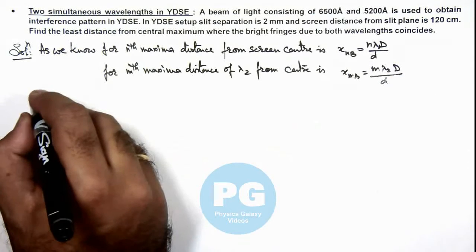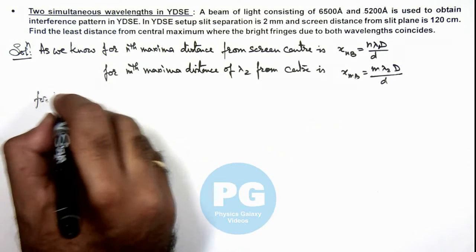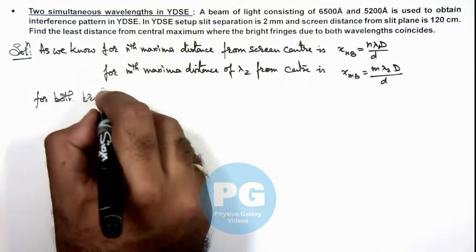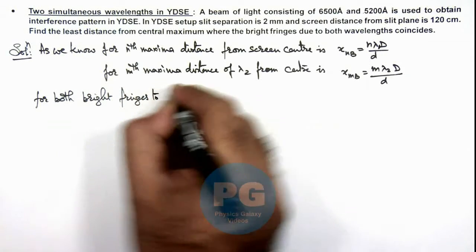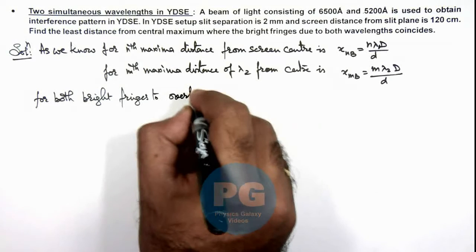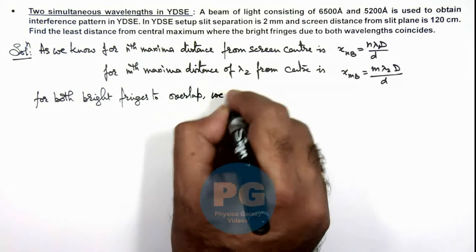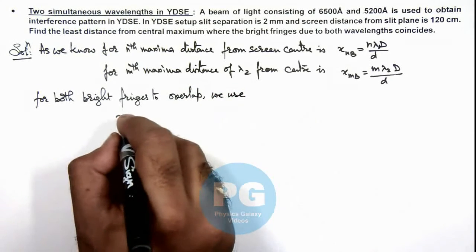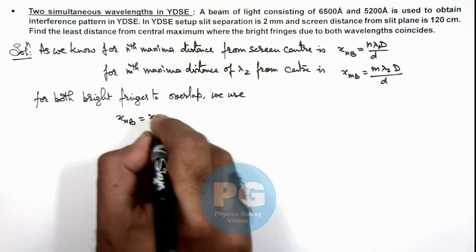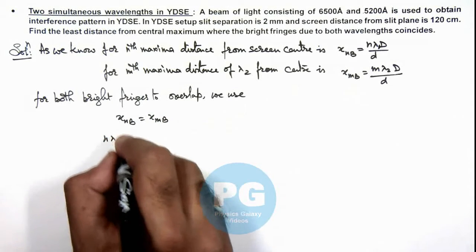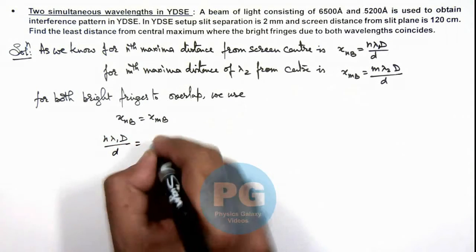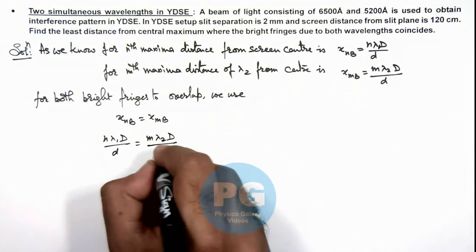And for both bright fringes to overlap or coincide, here we use x_n b must be equal to x_m b. If we substitute the values this is n lambda 1 D by small d should be m lambda 2 D by small d.